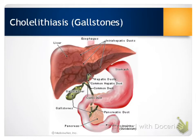In this wrap-up video, we're going to talk about gallstones and pancreatitis. Cholelithiasis, or gallstones, is the most common problem of the gallbladder. Typically, it happens because there's an imbalance of cholesterol, bile salts, and calcium, which leads to stone formation.